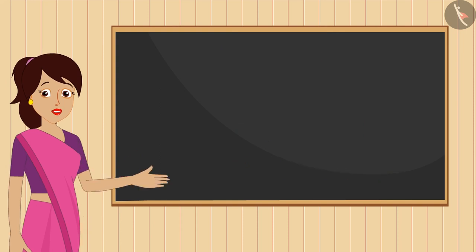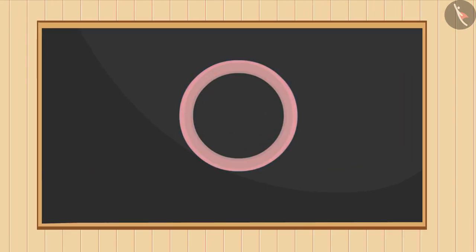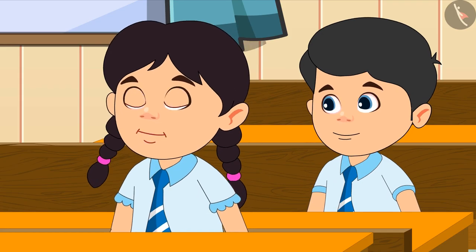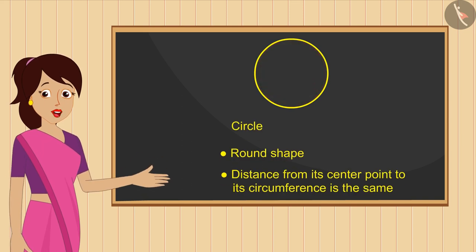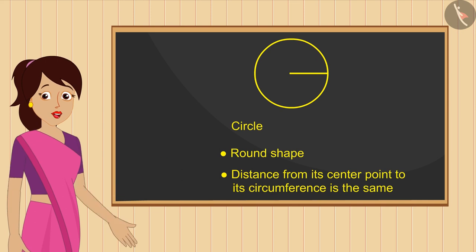Now tell me that if we trace this bangle on a paper, then which shape shall we get? This is a circle. Absolutely right, because this is a round shape in which the distance from the center point to its circumference is the same, so it's a circle.